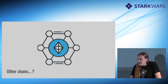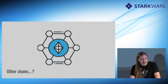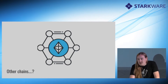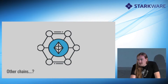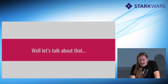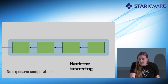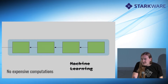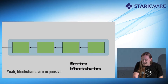So what about other chains? We're here to talk about cross-chain communication. Cross-chain communication is really about verifying the consensus process of a remote chain in the local chain. We already said we can't do expensive computations, and blockchains are pretty expensive.